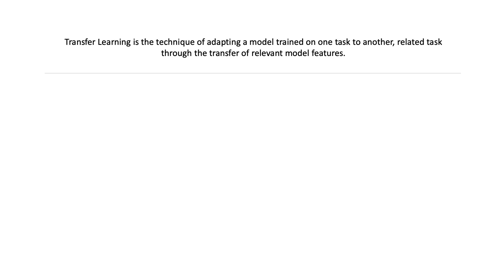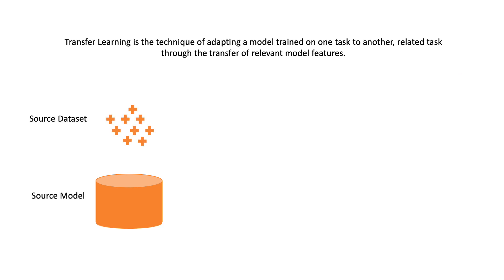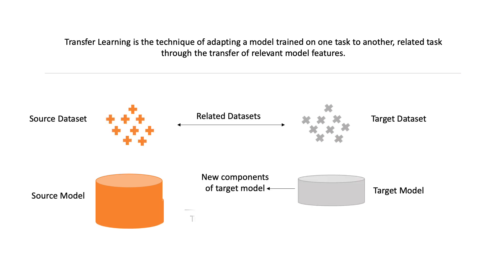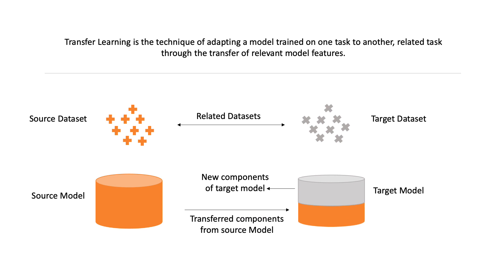Transfer learning is a popular machine learning approach in which a model trained on one task can be adopted for other related tasks using a smaller training dataset. However, transfer learning is primarily an expert tool because it requires a series of interdependent sub-tasks such as identifying transfer candidates, transferring them successfully, and identifying subsequent steps.